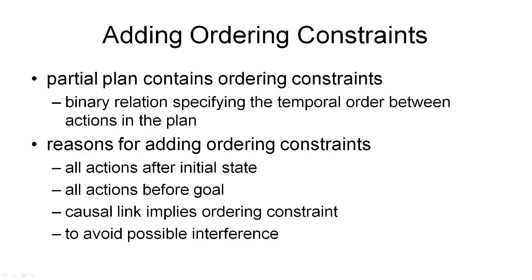The final plan refinement operation we have is to add ordering constraints to our plan. Ordering constraints, the final component of a partial plan, are simply binary relations that specify the temporal order for the goal. And there are quite a few reasons we may consider for adding ordering constraints to our plan. Some of which we've already seen. So, the first reason for an ordering constraint is quite trivial, namely that all actions must come after the initial state. And similarly, all actions must come before the goal. We never add actions before the initial state, and we never add actions after the goal. And this can be enforced with ordering constraints.